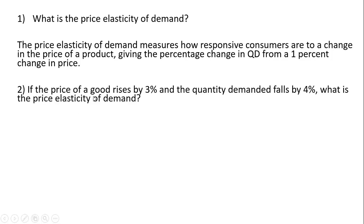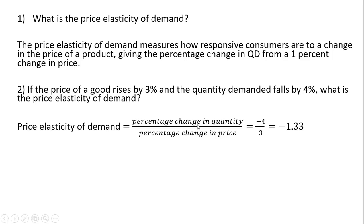Question 2: If the price of a good rises by 3% and the quantity demanded falls by 4%, what is the price elasticity of demand? The price elasticity of demand is the percentage change in quantity demanded divided by the percentage change in price. Writing the formula here: the percentage change in quantity demanded is −4, caused by a 3% increase in price, so −4 divided by 3 is −1.33. In other words, every 1% increase in price reduces the quantity demanded by 1.33%.